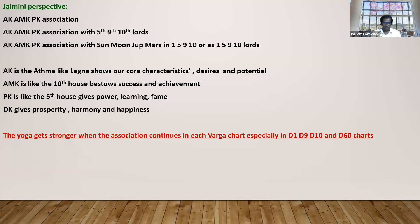In my class I've explained a lot about the conjunction of AK-AMK in Navamsa and Dasamsa and how important Rajayoga forms with this. Putra Karaka is like the 5th house — mainly as far as yoga is concerned: power, learning, fame, government, celebrity status. This is very important — AK, AMK, PK. The next one is DK. DK is like the 2nd or 7th house — it gives prosperity, harmony, happiness. In most multi-billionaires you will see DK very well placed. The yoga gets strong when the association is present especially in D1, D9, D10, and D60.